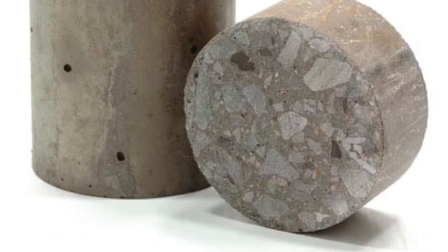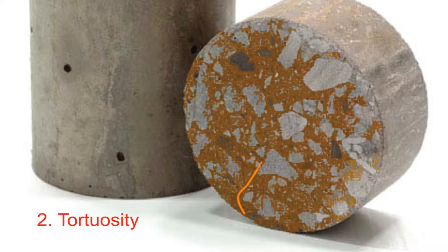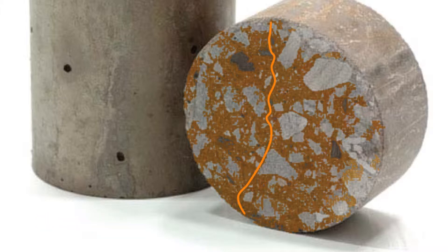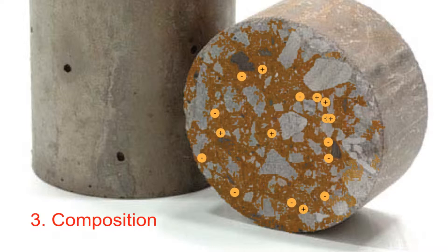Our electrical resistivity test is going to be related to three main factors inside the concrete. It's going to be related to the porosity — how many holes there are inside of the system. It's going to be related to how tortuous the porosity is, how wiggly the pores are — whether they are straight from one side to the other or very tortuous. And it's going to be related to the composition of the fluid that's inside of those pores.